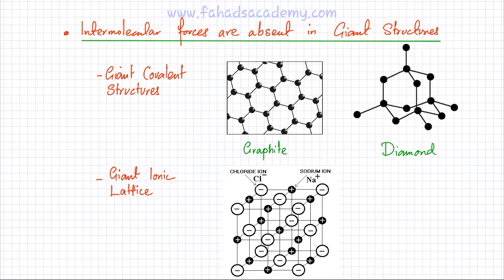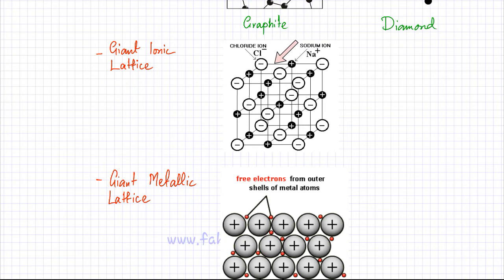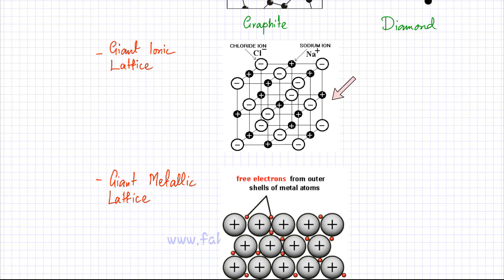The same is true for giant ionic lattices. In a giant ionic lattice, there is a network of positive and negative ions all forming strong ionic bonds — a positive ion attracts a negative ion and so on. So there is no room for intermolecular forces. Always remember: intermolecular forces are present between two completely separate things.